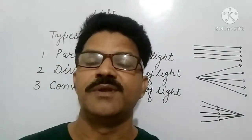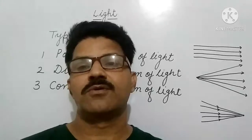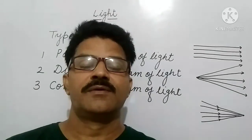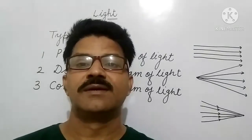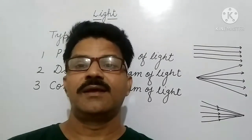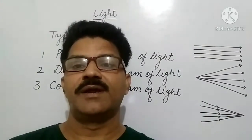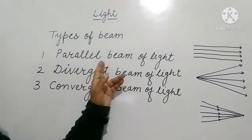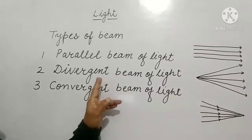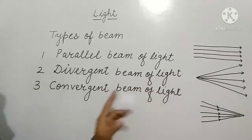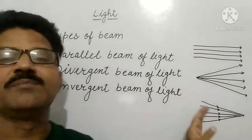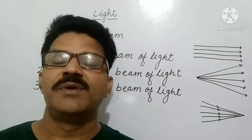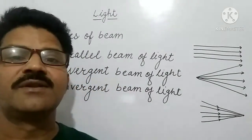Good morning everyone. In the previous video, we were discussing about light. Light is a form of energy with the help of which we can see things. We discussed ray of light and beam of light. There are three types of beam of light: parallel beam of light, divergent beam of light, and convergent beam of light. Today we will discuss reflection of light.